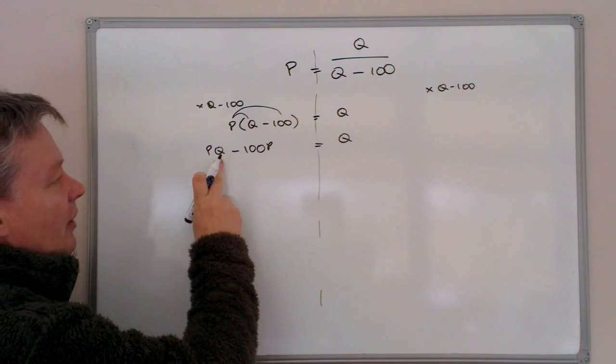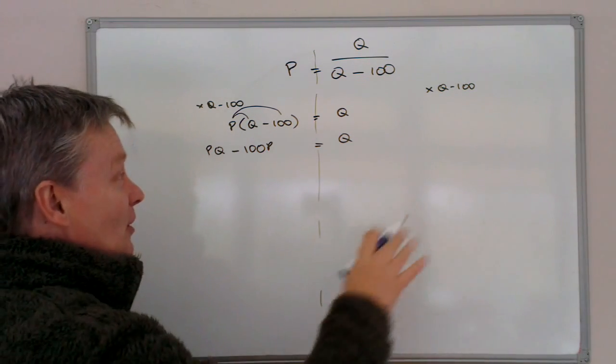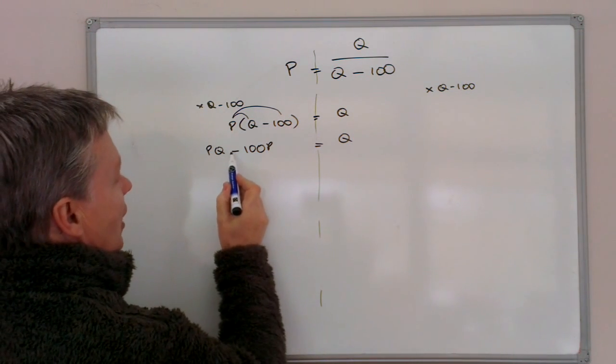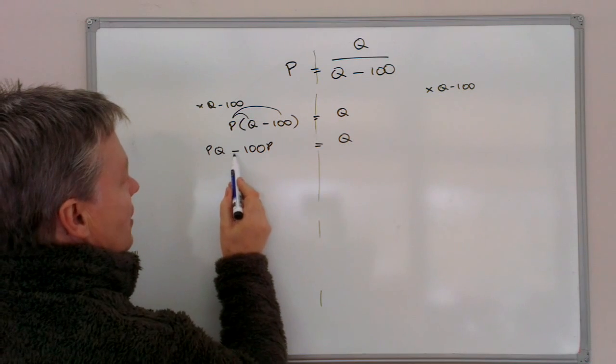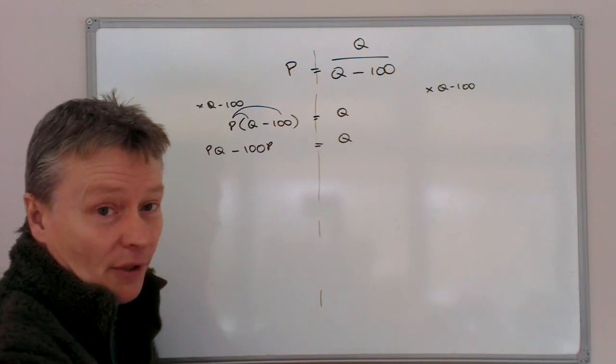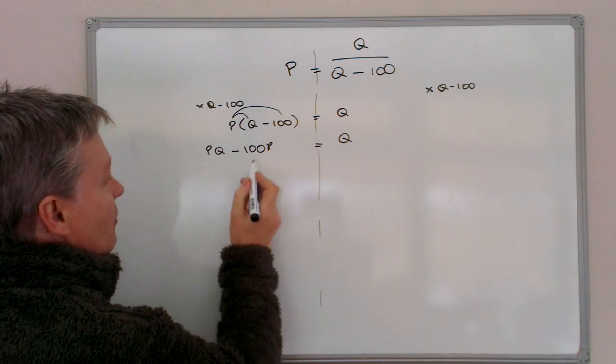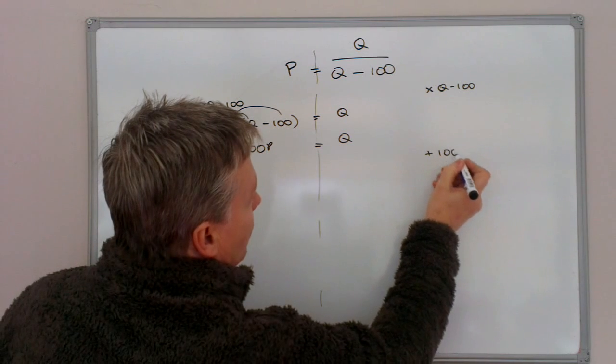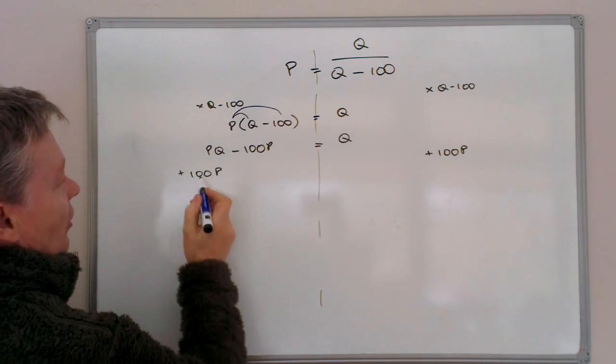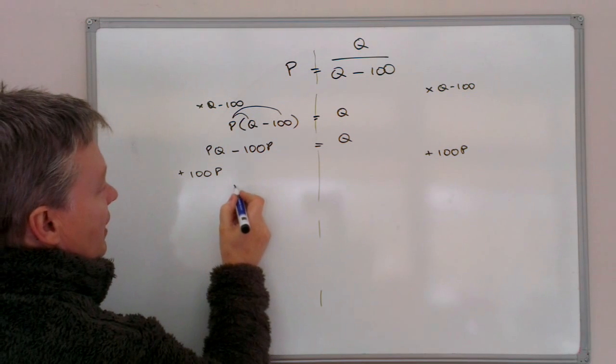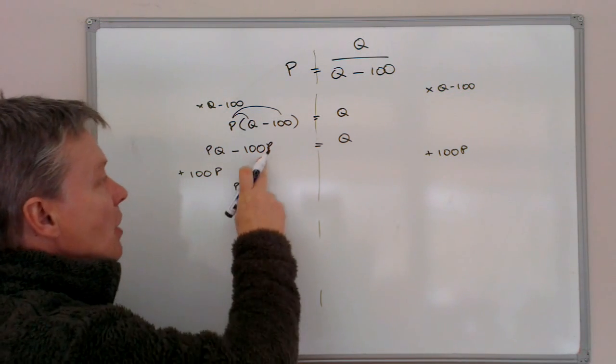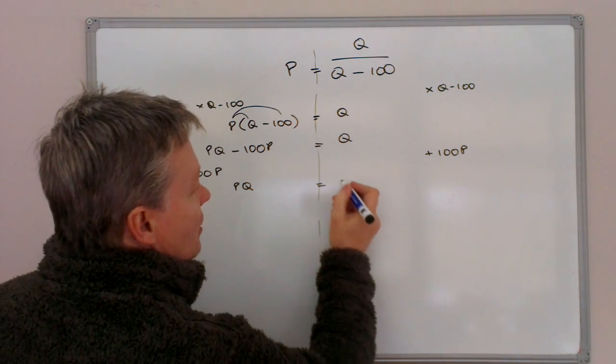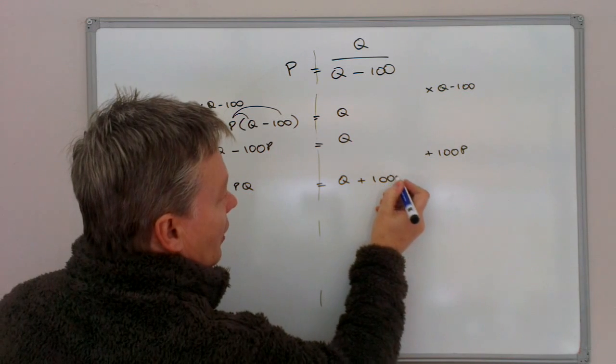So I've got Q here and Q here. And really, I want Q's one side and everything else on the other. So what I'm going to do is I'm going to try to make sure that I get my P's on one side as far as I possibly can. So the first thing I'm going to do is I'm going to add 100P to both sides. So on this side now, I get PQ on its own, because minus 100P plus 100P means that I've got zero. On this side, I'm going to have Q plus 100P.